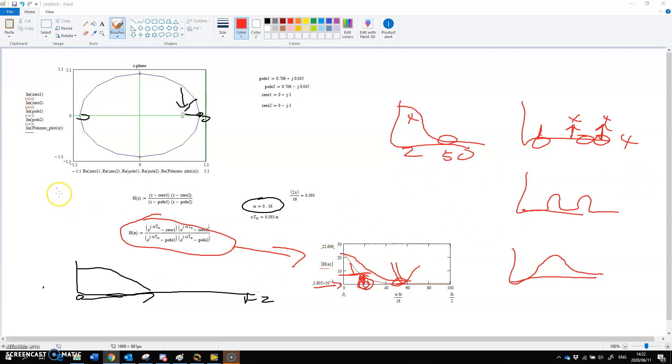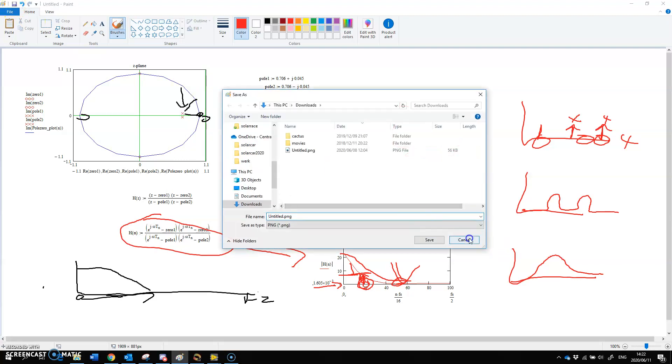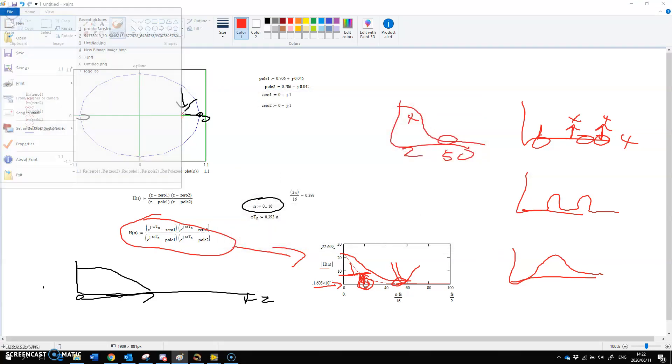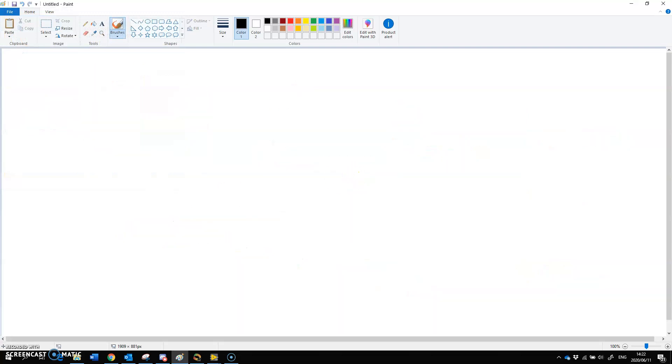Alright, now that we're happy with our filter and the Bode plot, we're going to start calculating the coefficients. Just save this one, file new. So we want it for IIR filter, and we still have to program the IIR filter, but we're going to program this structure. We want these components.